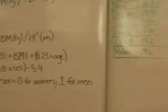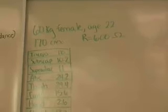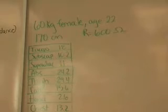So for our sample, we have a 60 kilogram female, age 22. Her height is 170 centimeters. And the resistance that was calculated with the bioelectrical impedance was 600 ohms.